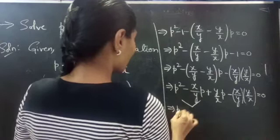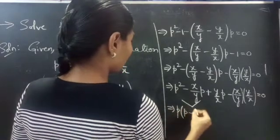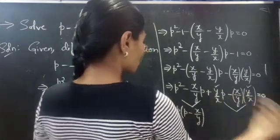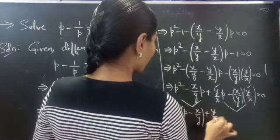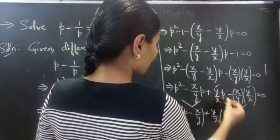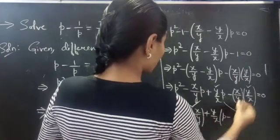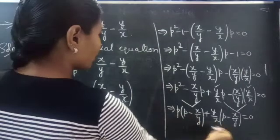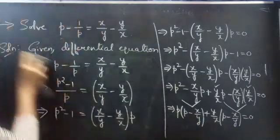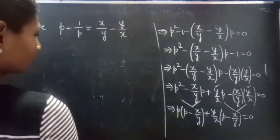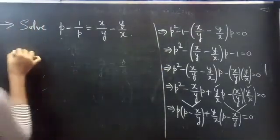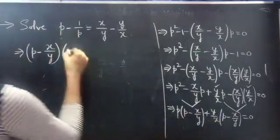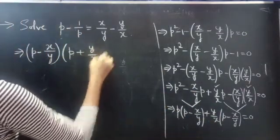Now take P common from the first two terms, giving P times (P minus x/y). Then take y/x common from the next two terms, giving y/x times (P minus x/y). Since (P minus x/y) appears in both terms, take it as a common factor.